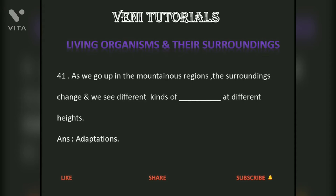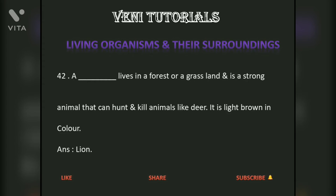As we go up in the mountainous regions the surroundings change and we see different kinds of adaptations at different heights. A lion lives in a forest or a grassland and is a strong animal that can hunt and kill animals like deer. It is light brown in color.